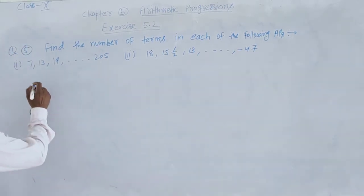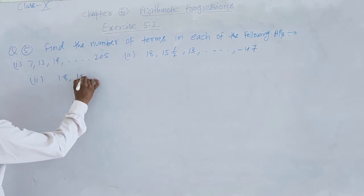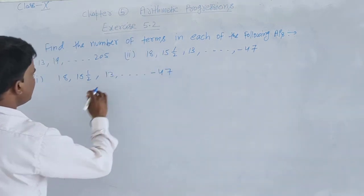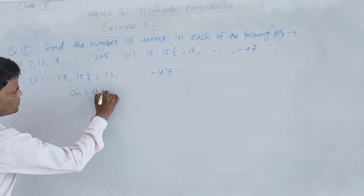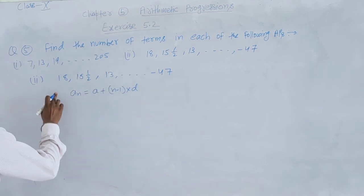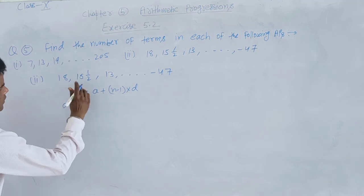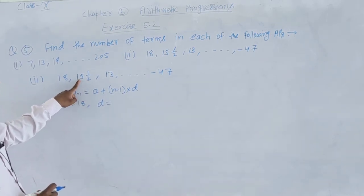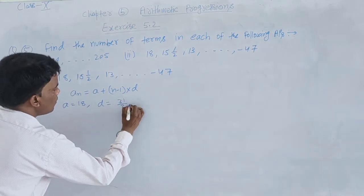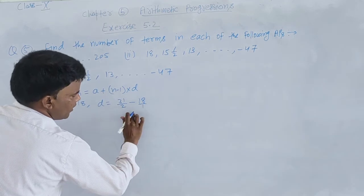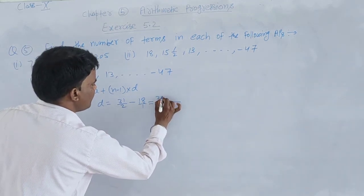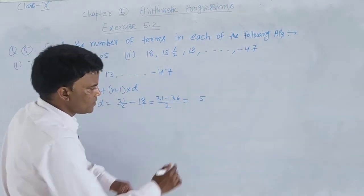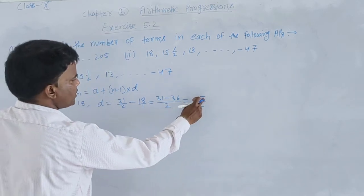Next we discuss the second part: the AP is 18, 15½, 13, ..., −47. We use the nth term formula An = a + (n−1) × d. The first term a = 18. For common difference: d = second term minus first term = 31/2 − 18 = (31 − 36)/2 = −5/2. So the value of d is −5/2.